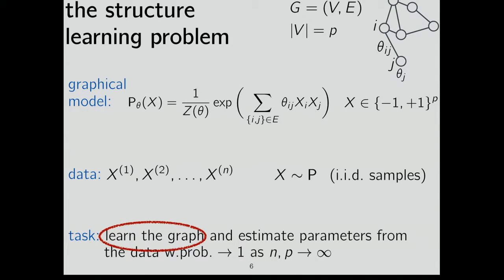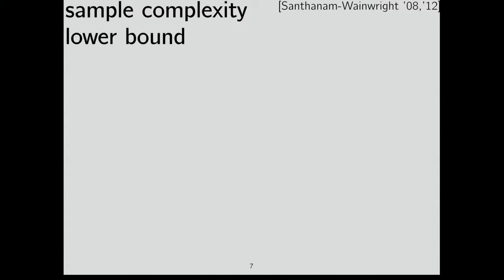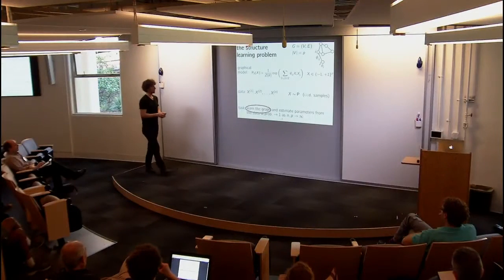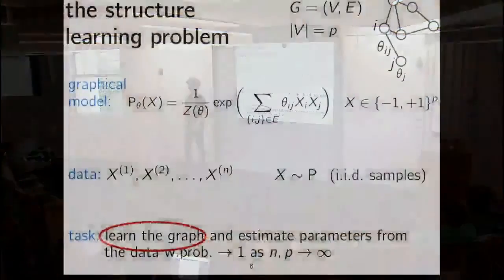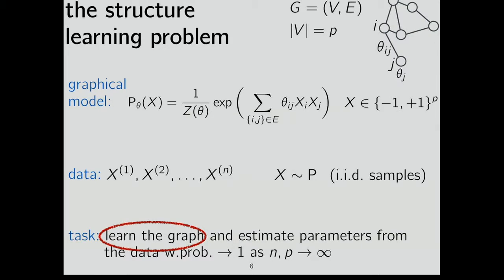Specifically, the goal is: can we learn the graph that underlies the model from the data, with probability going to one? Learning the graph means learning the support of the theta_ij's — which edges are there and which are not. It turns out that once you know the graph, learning the actual theta_ij is very easy if the graph is sparse: if the degree is bounded by d, you can just do logistic regression of each node on its neighborhood.